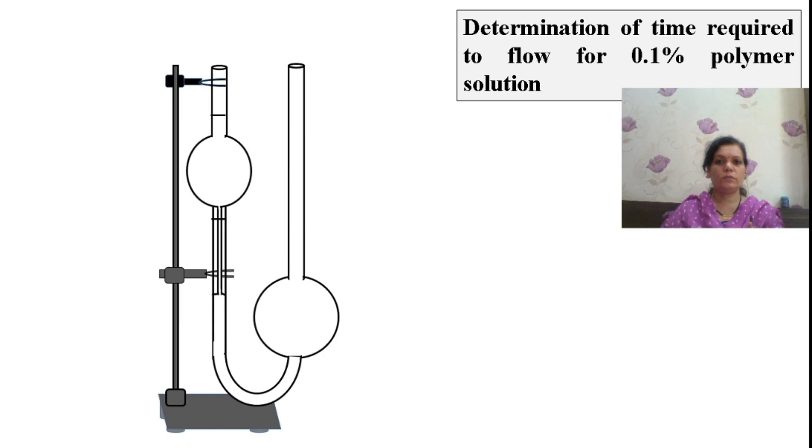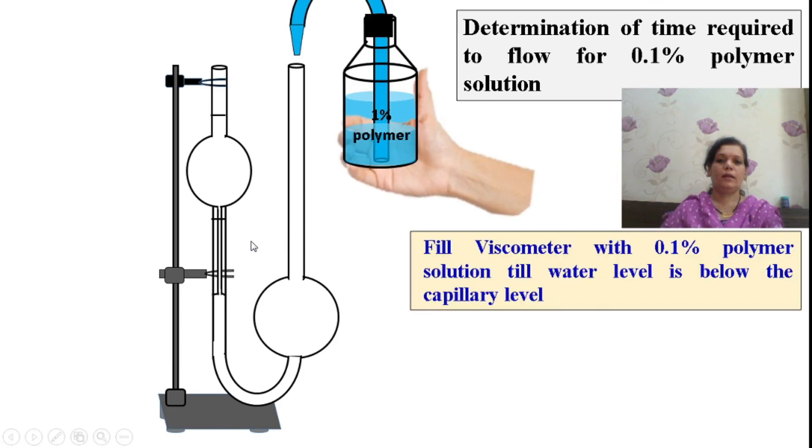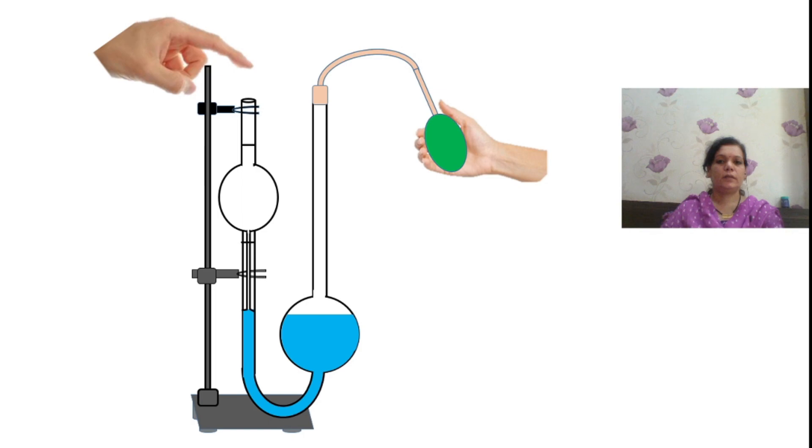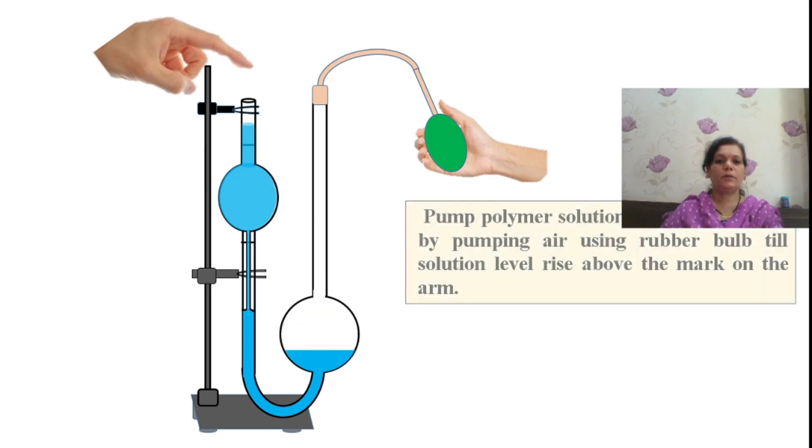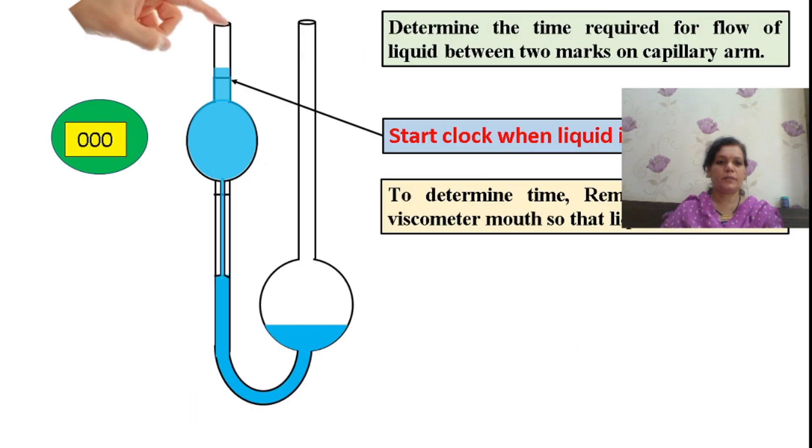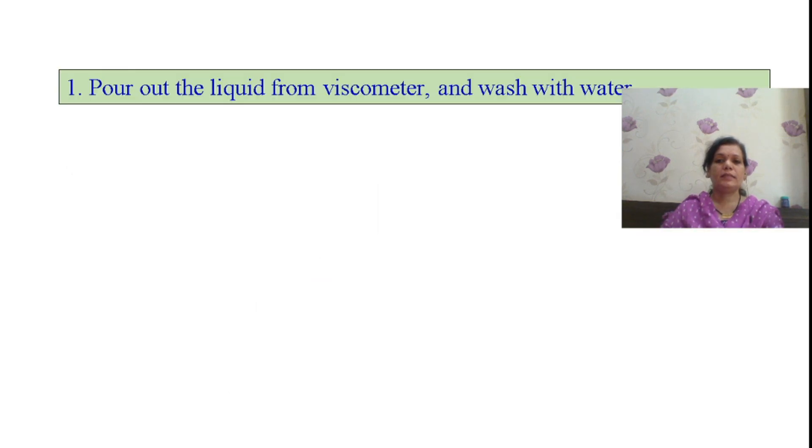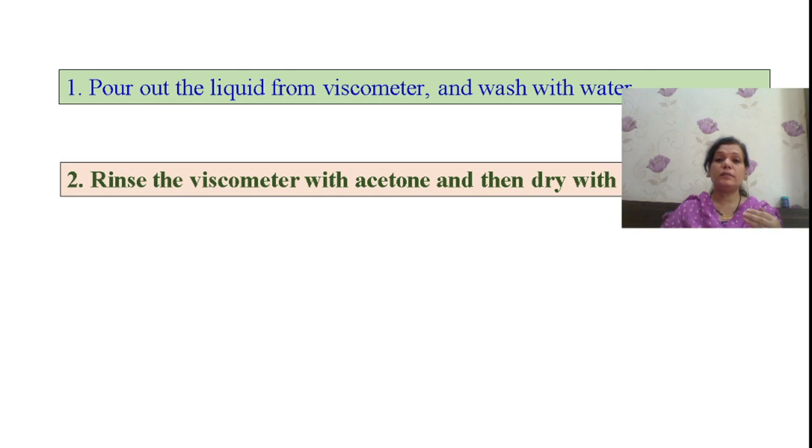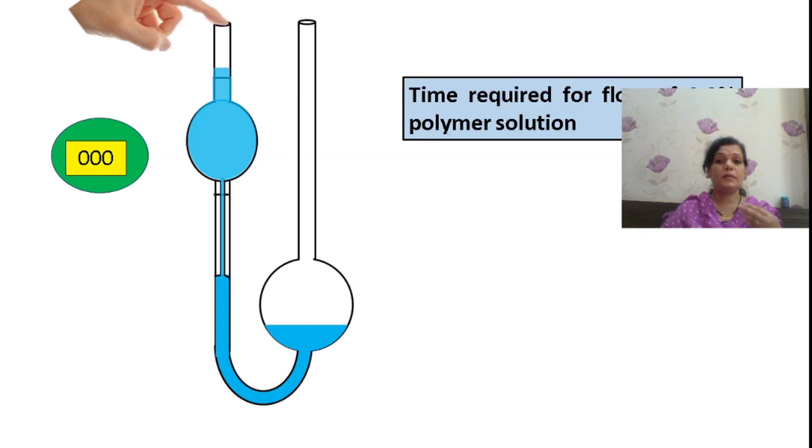Now, take your 0.1% solution. We will move from 0.1% to higher concentration. Fill it on this particular side. Look at the water level. Utilize the rubber bulb to pump air and measure the time of flow for 0.1% solution. It is 52. It is increasing. As you have utilized polymeric solution, it is increasing. As the density of the solution increases, the time of flow you will observe has been increased.